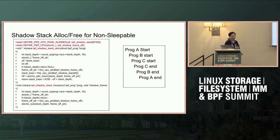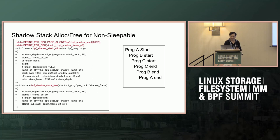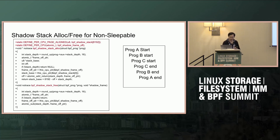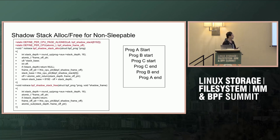For non-sleepable programs, we define a per-CPU page — page-aligned. In this example I allocated two pages. Alloc and free is similar to the existing approach: you have allocated space of two pages, then do some calculation. There are atomic operations just in case two programs try to allocate space at the same time, since it's per-CPU and could be interrupted or preempted. You calculate the offset — and the size can be calculated by the program itself, which can be optimized — and you return the frame pointer.